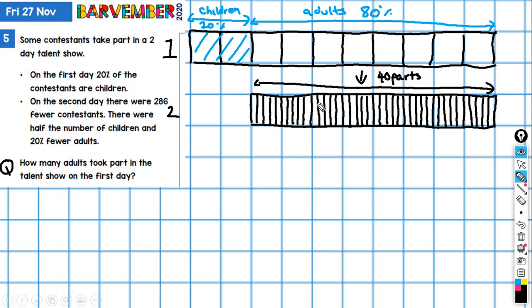What do we know? We want to know what is 20 of 40. Well, 10 would be four, so 20 is eight. So we know that one, two, three, four, five, six, seven, eight. So eight of these parts represents the 20% fewer adults.